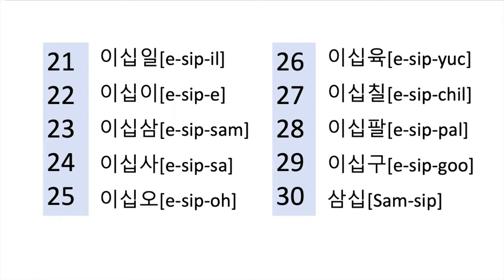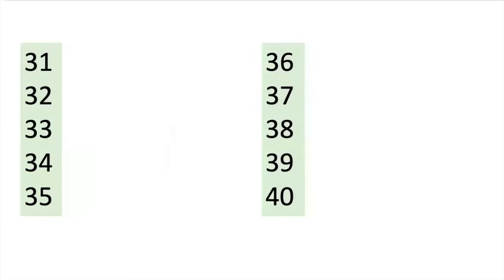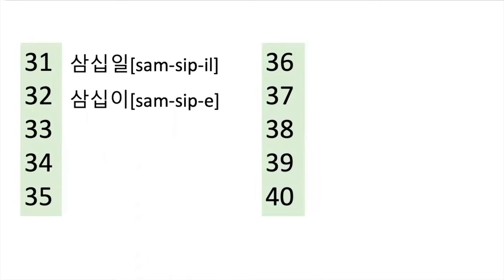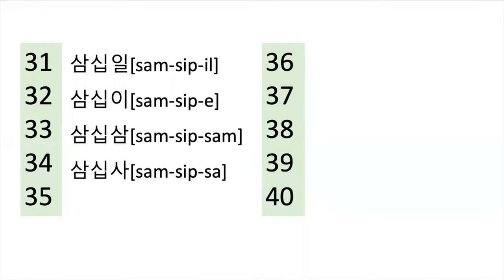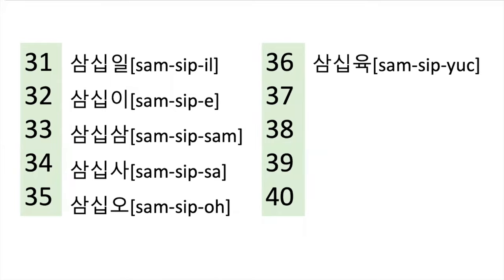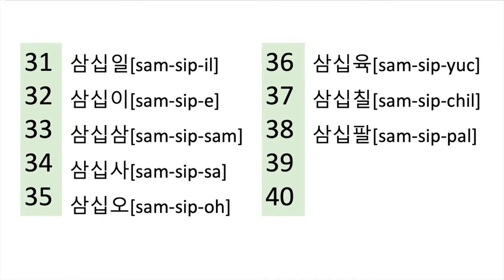And let's go for 31. 31 is sam ship, and then you say one, which is il. So sam ship: 31, 32, 33, 34, 35, 36, 37, 38, 39.